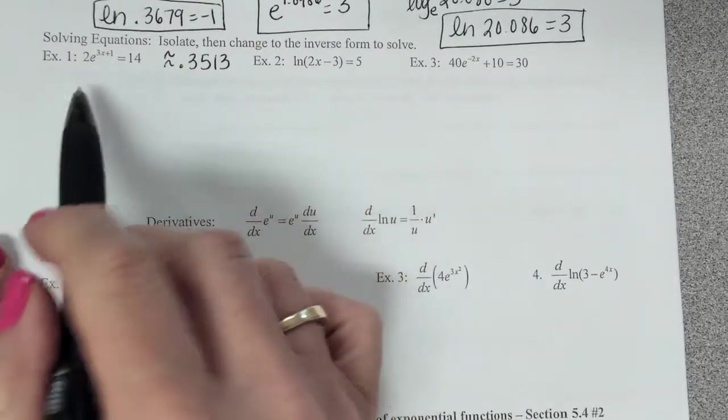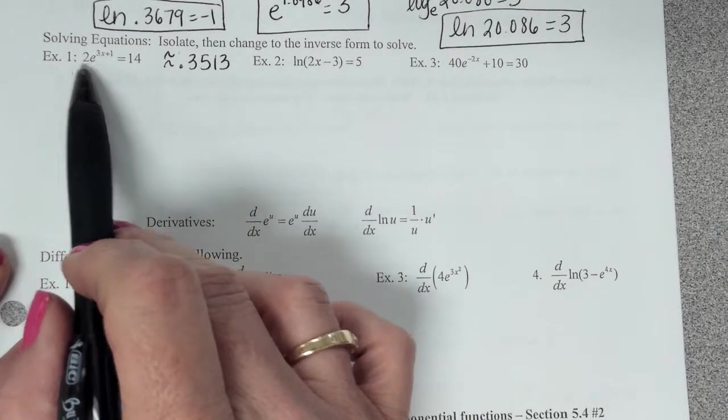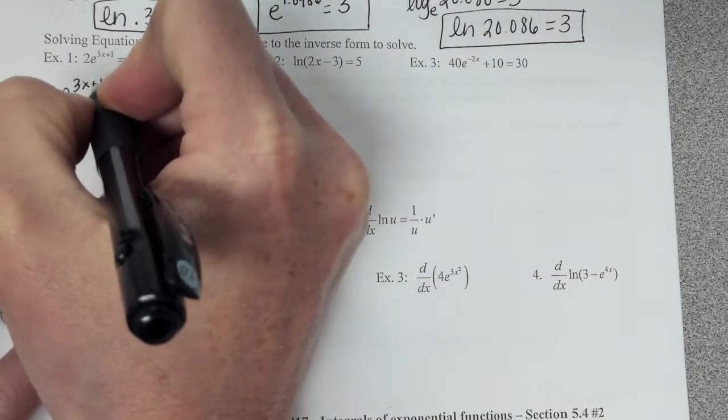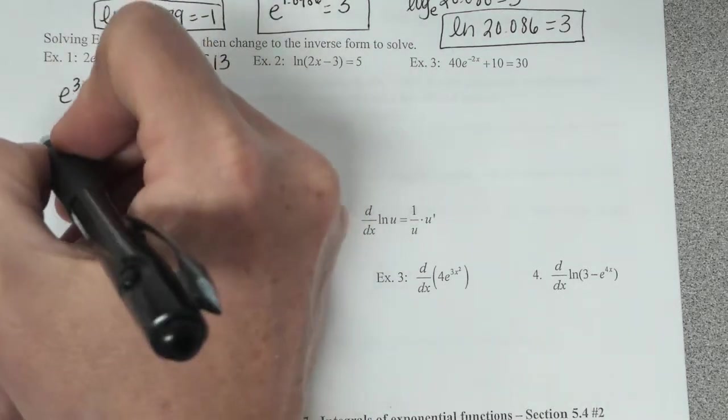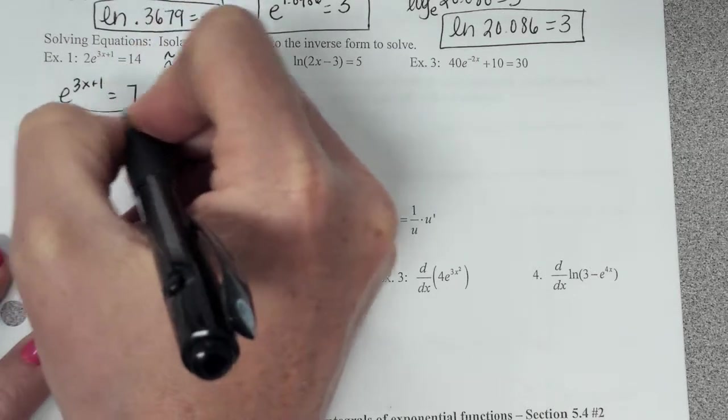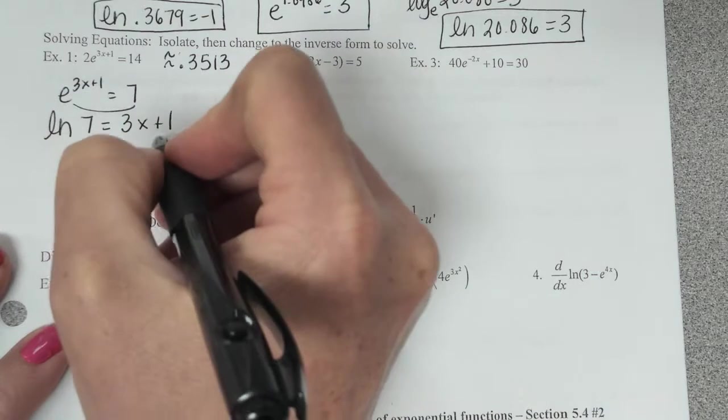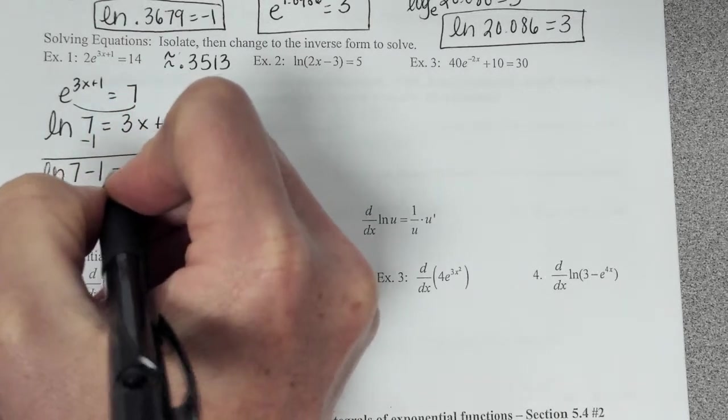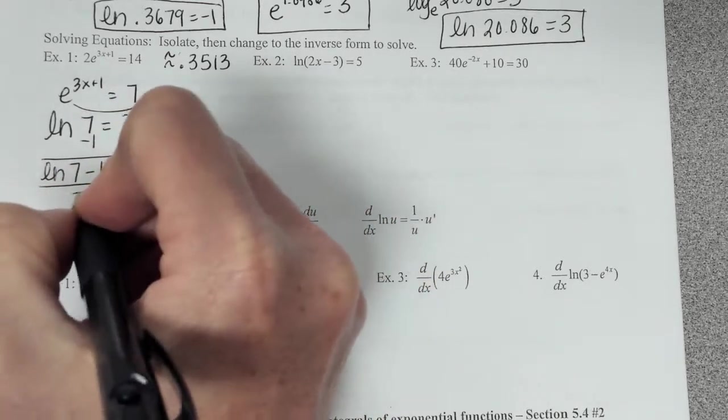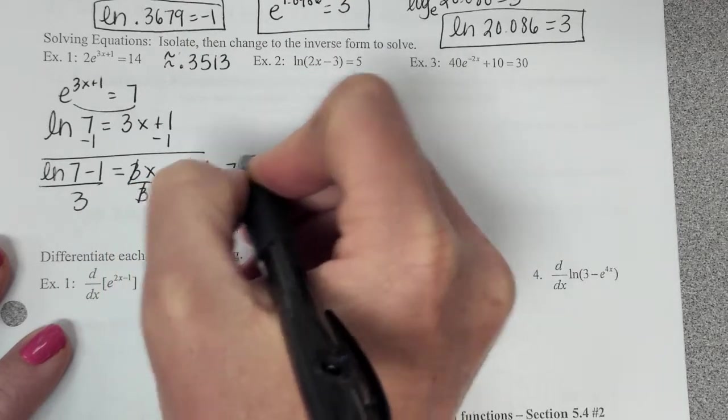Now, that's a decimal approximation. If I want to find the exact solution, I have to know how to solve it algebraically. The directions say, first of all, you have to isolate. So I have an e that I want to isolate, so I divide by 2. So e to the 3x plus 1 equals 7. And now I have to use my inverse function. So what's my inverse function of e? Natural log. So I do natural log of 7 equals 3x plus 1. To solve this for x, I'm going to subtract 1 from both sides. I can't subtract these, so it just stays natural log of 7 minus 1 equals 3x. Divide by 3. So our exact answer is x equals natural log of 7 minus 1 over 3. That's the exact answer.